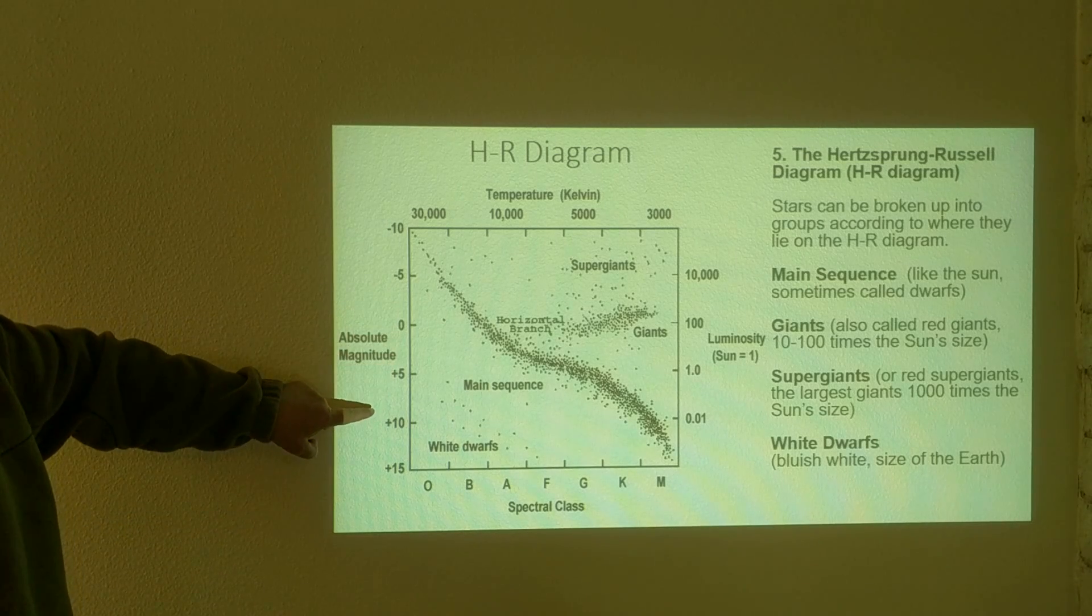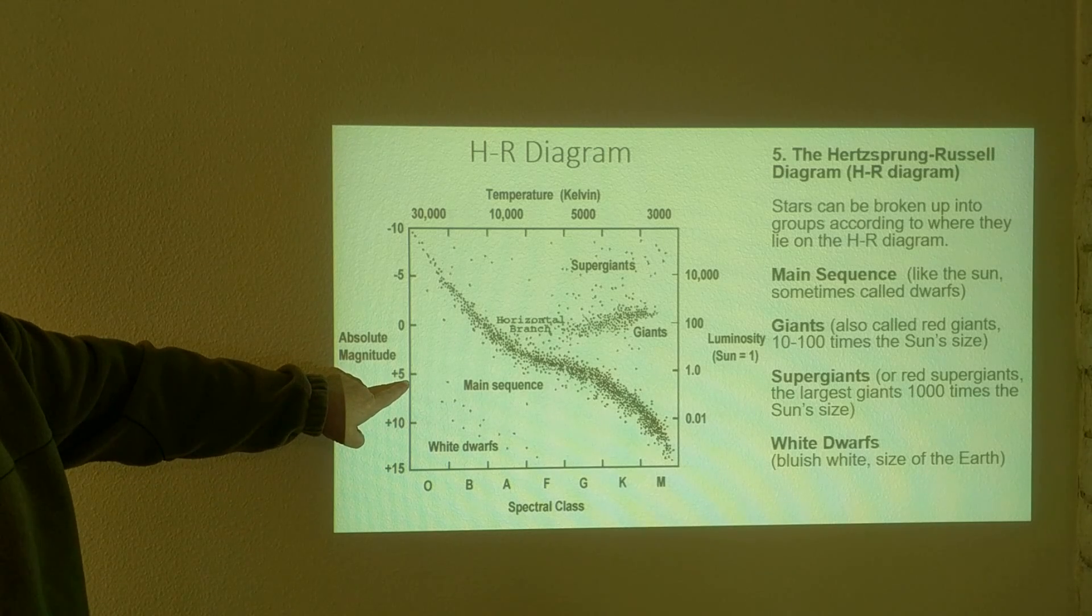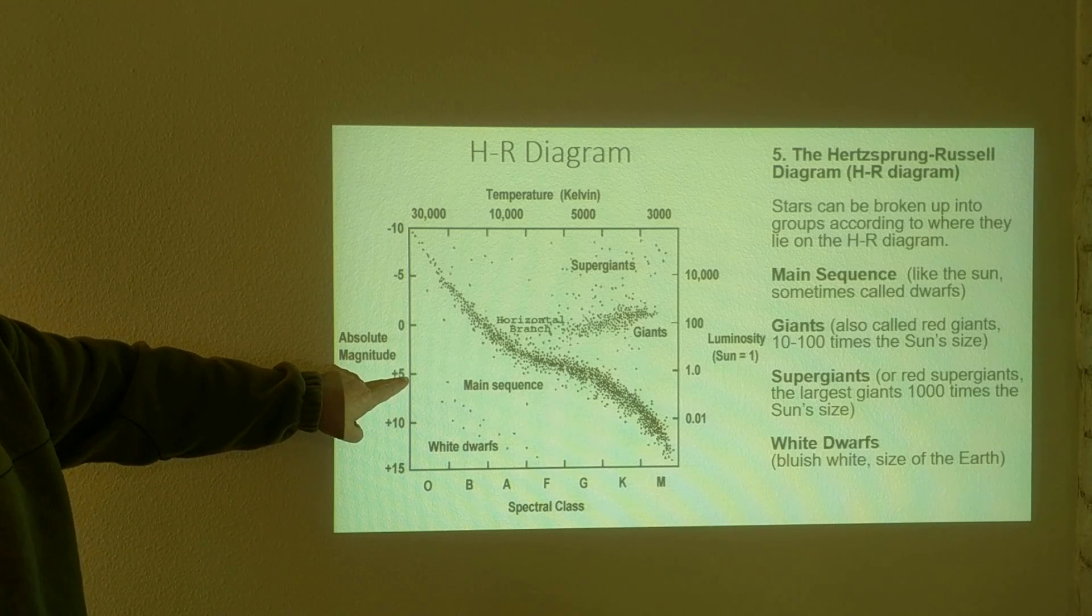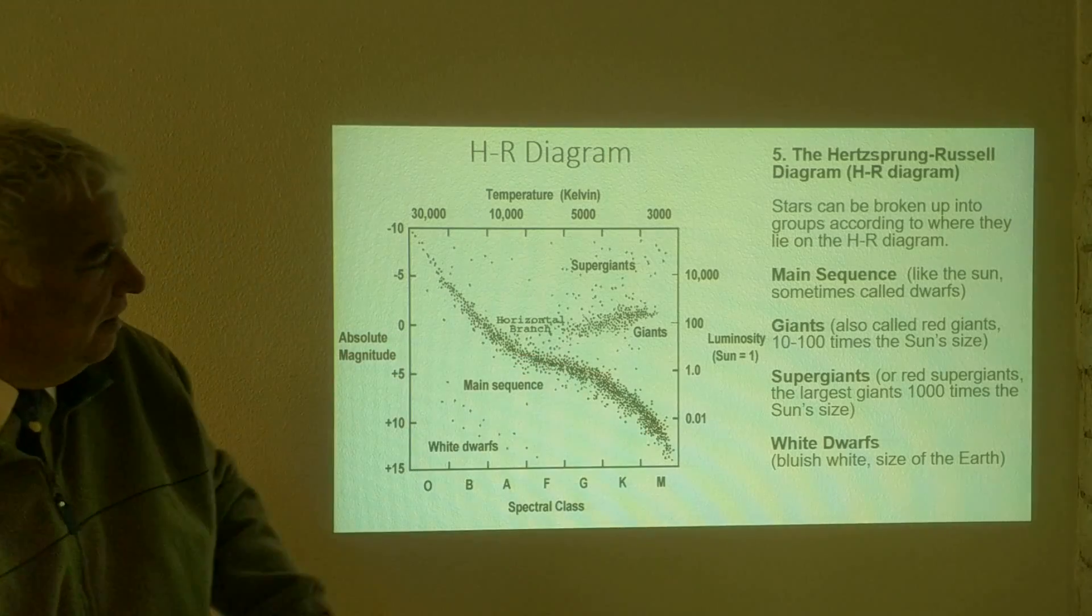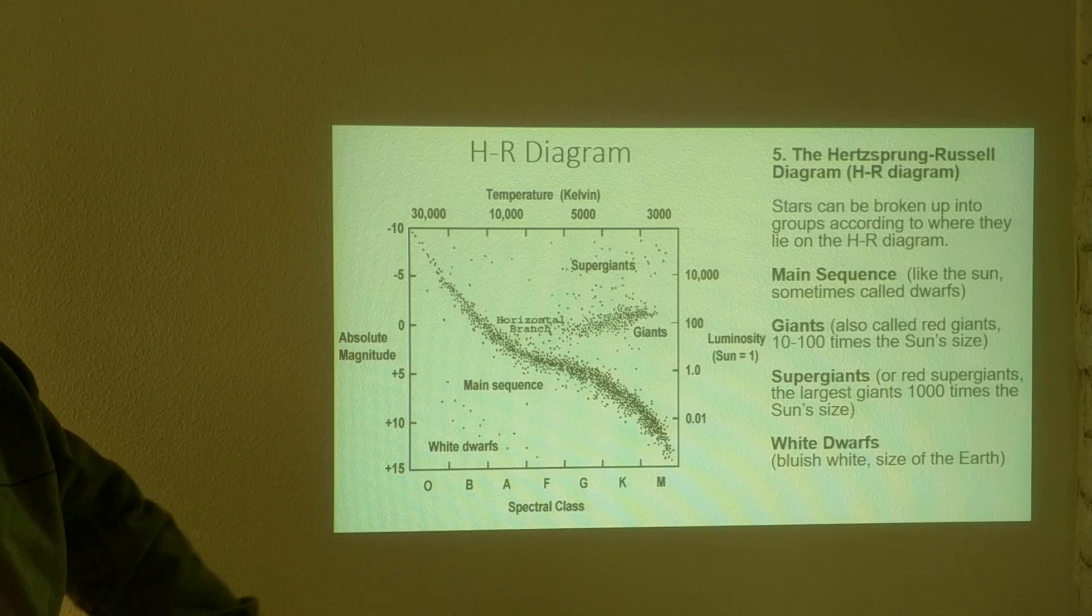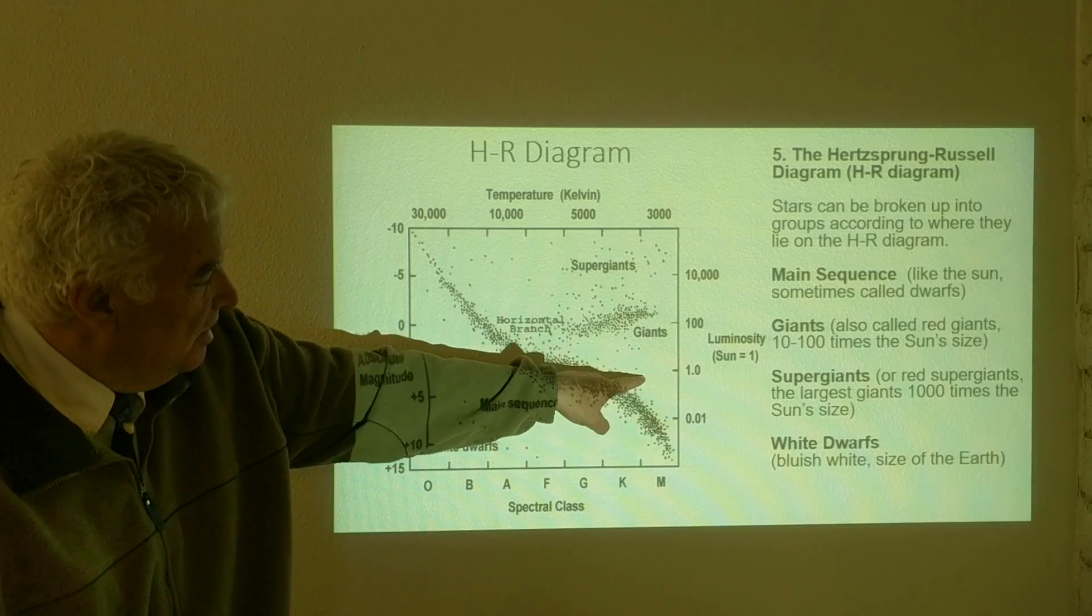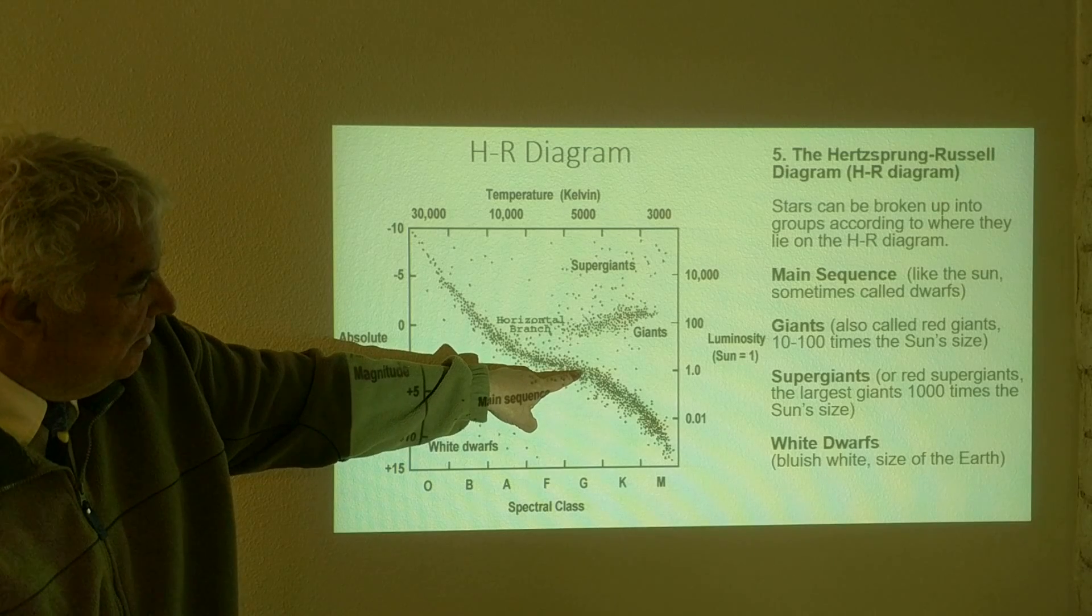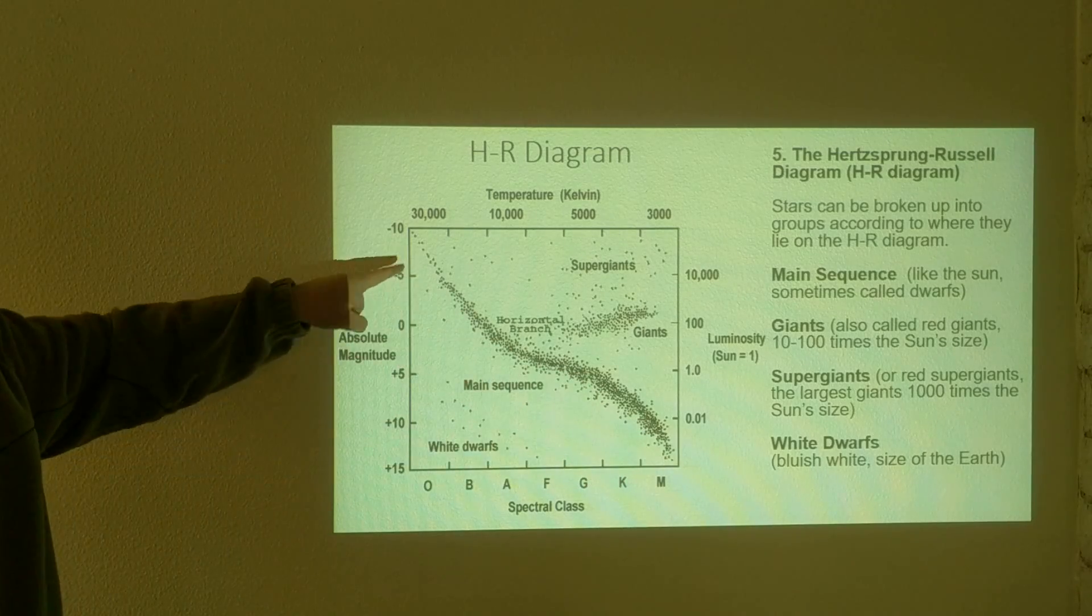The sun is about approximately plus five in this scale, which is one here. And this is exactly the luminosity compared to the sun. So the sun is located right here on a group of stars called the main sequence.